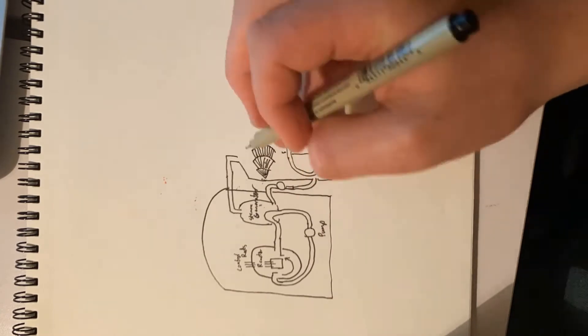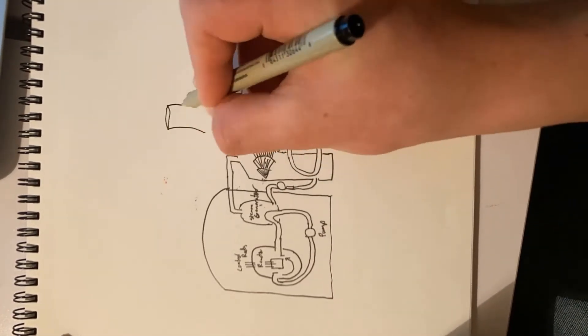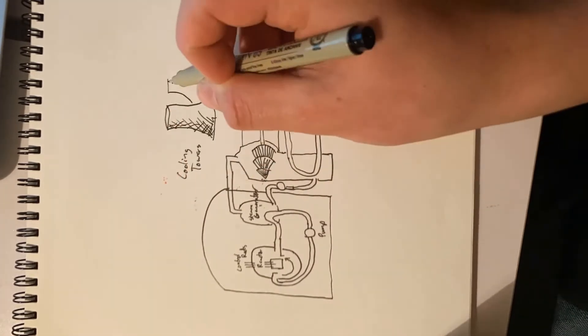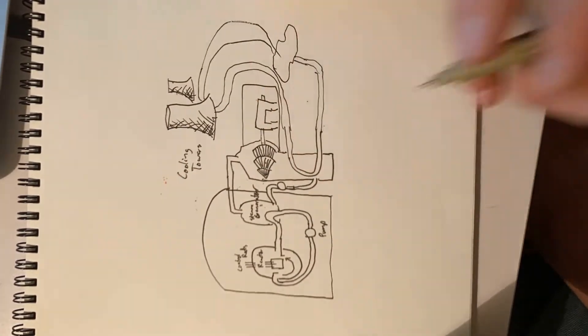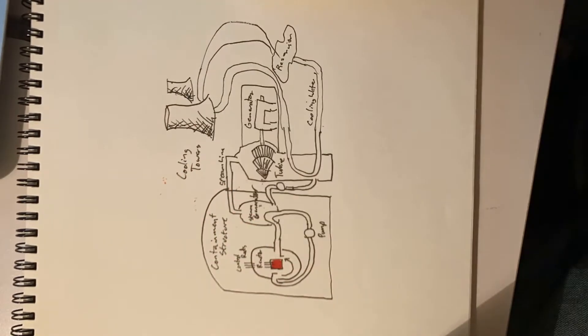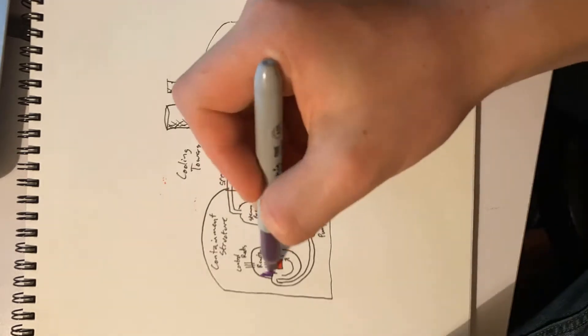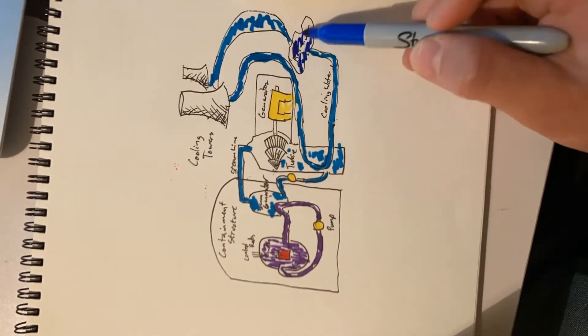Unbeknownst to them, the graphite tips of the control rods, through a process known as the negative void coefficient, decreased the ability of the water to absorb neutrons, temporarily increasing the reaction and causing a catastrophic criticality incident and a steam explosion that effectively blew the top off of the containment vessel.